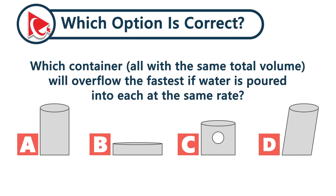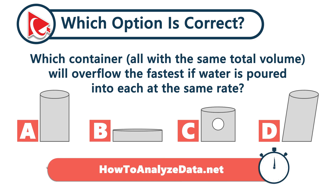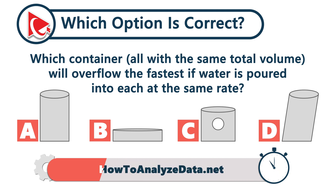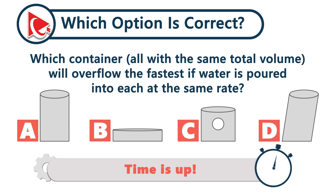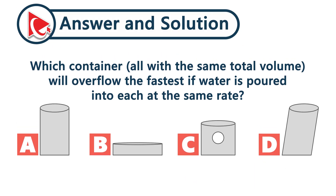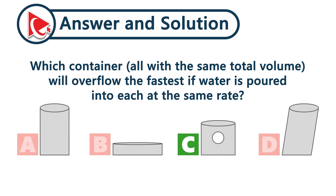Which container — all with the same total volume — will overflow the fastest if water is poured into each one at the same rate? In three of them, water fills gradually. But in one container, a hole causes it to leak halfway through the fill, making it the first to overflow — function over form. The correct answer is choice C: a container with a hole halfway up the side.